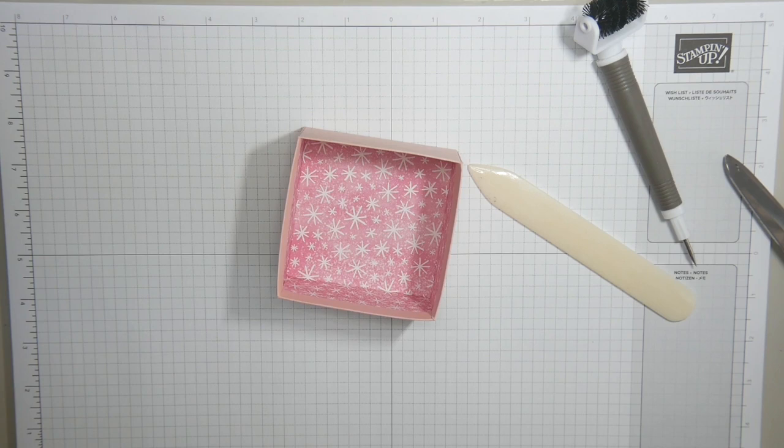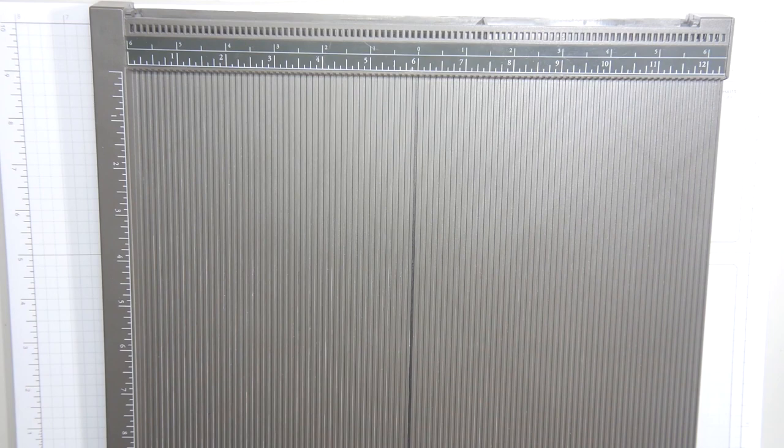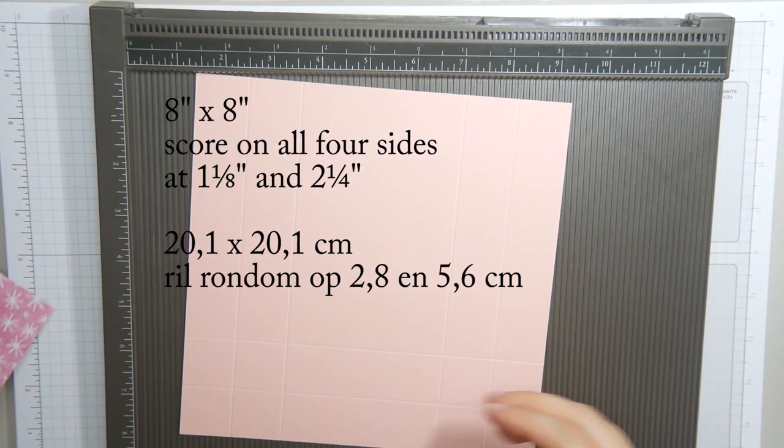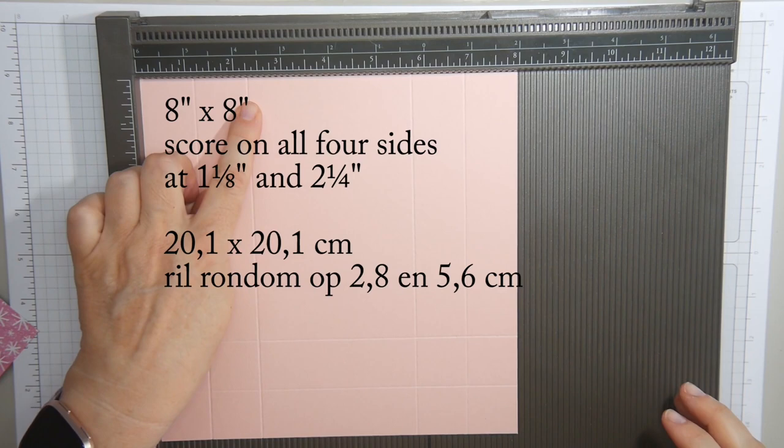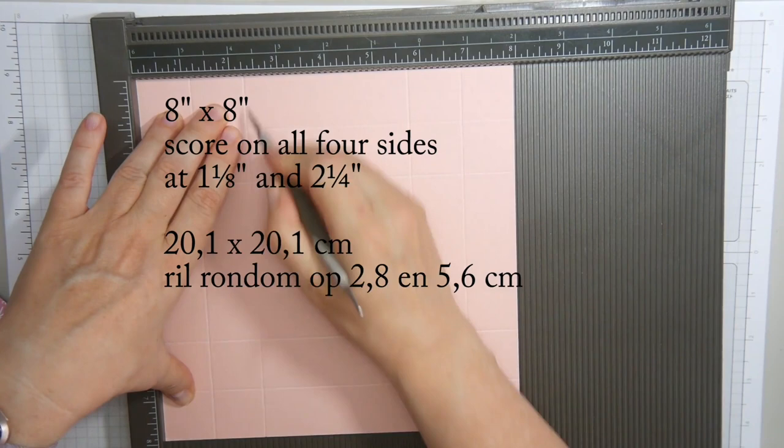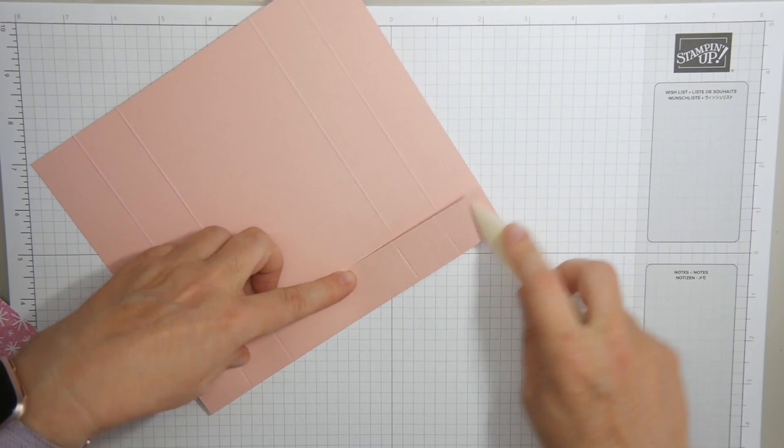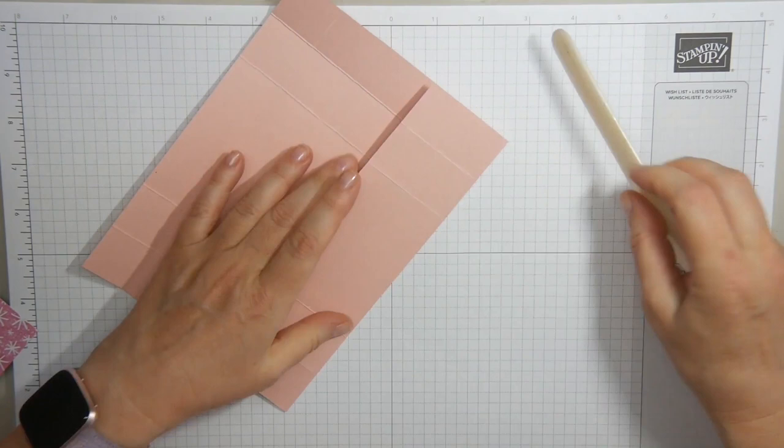So let me get rid of my cuttings again and then I'll continue with the top of the box, the lid if you like. Again, some Blushing Bride cardstock and some designer series paper. Here, your score lines are at one and one eighth and two and a quarter, again on all four sides. I've already prepared that. So my final two score lines at one and one eighth and two and a quarter. And it's the same process. You fold and burnish your score lines, all of them this time.